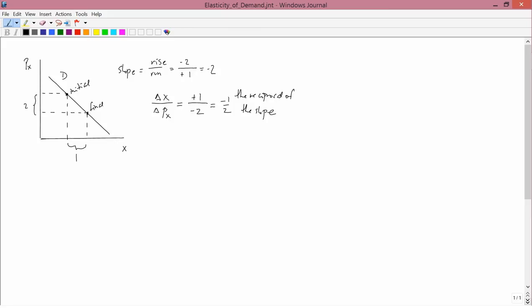Technically this is the reciprocal of the slope. And what it reflects is how sensitive quantity demanded is to changes in price. So the farther away this number gets from zero, the more sensitive demand is to changes in price. And the closer it gets to zero, the less sensitive changes in demand are from changes in price.